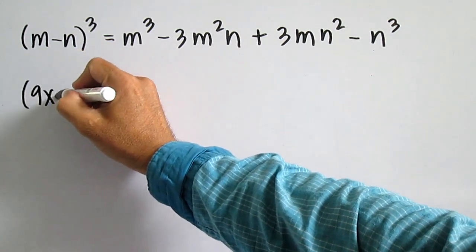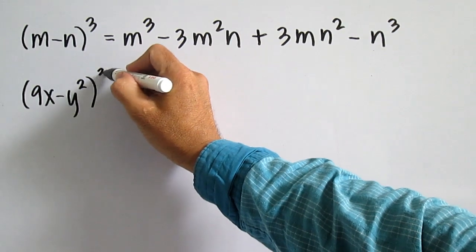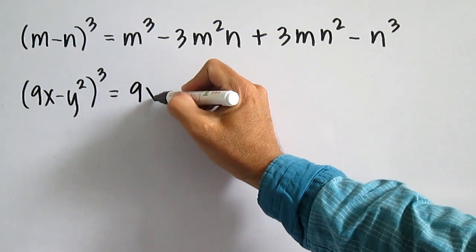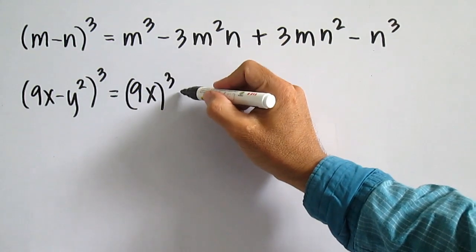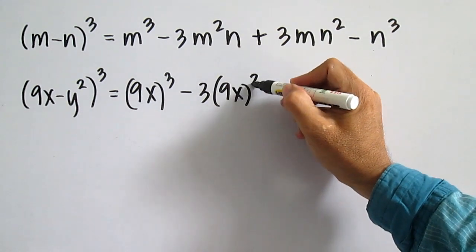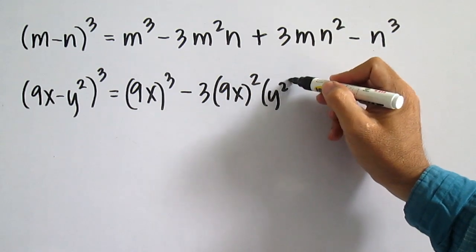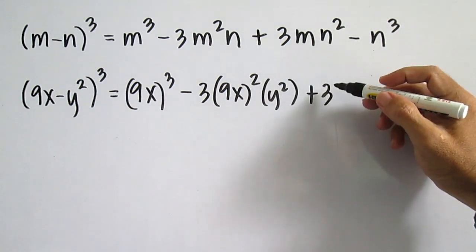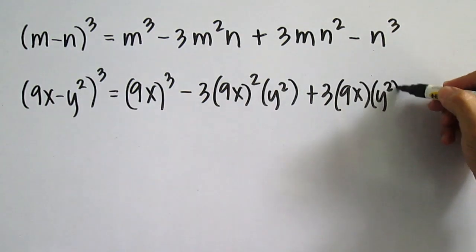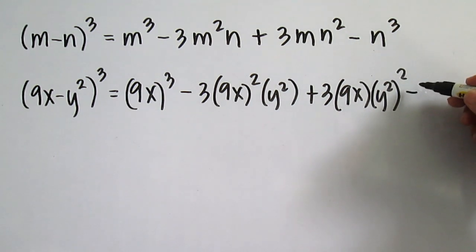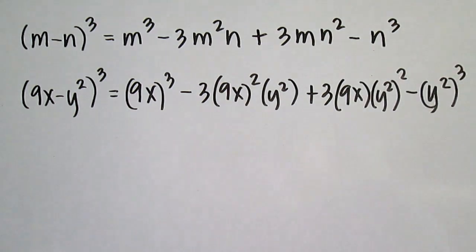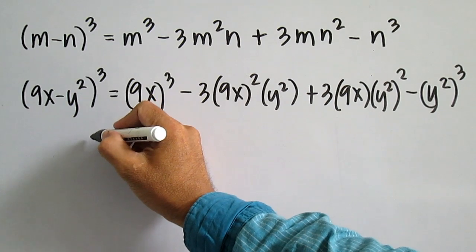Another example. The cube of the first term, minus thrice the product of the square of the first term and the second term, plus thrice the product of the first term, minus the cube of the second term, minus the cube of the second term. Simplify.